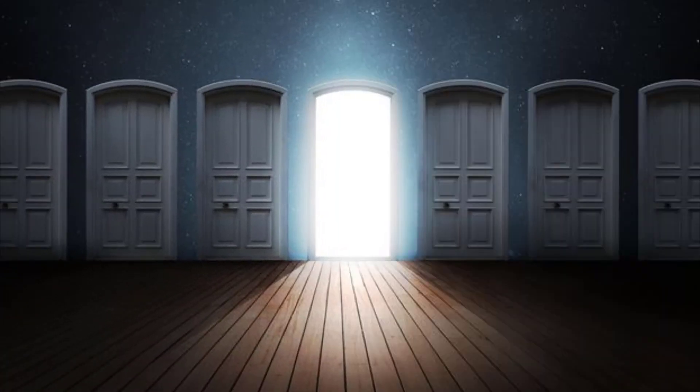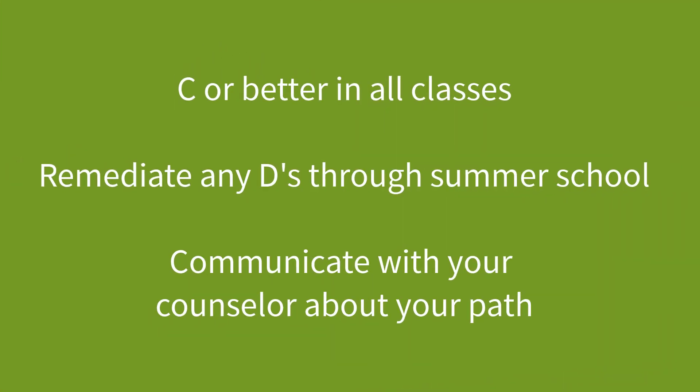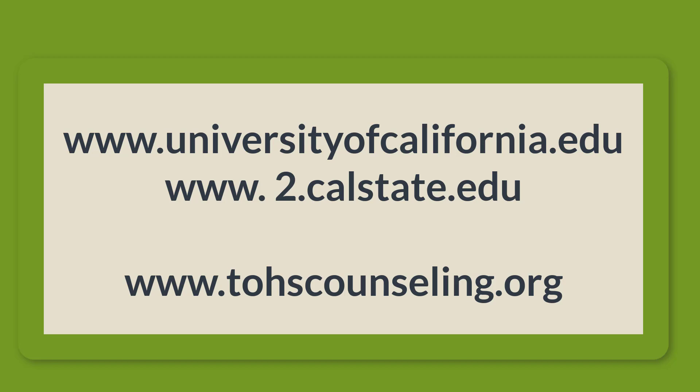We don't want any doors to be closed for you. Meeting the minimal requirements for A through G will put you on the path to attending college after high school. You must have a C or better in all your classes and remediate any Ds through summer school. Communicate with your counselor about your path. All of this information is accurate as of spring 2019, but the University of California and Cal State systems change their requirements from time to time. Please check their websites for the most up-to-date information, and check out our counseling webpage for any additional updates.